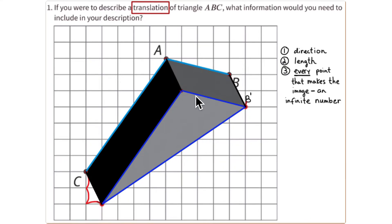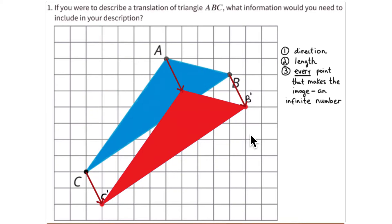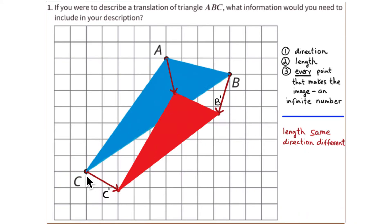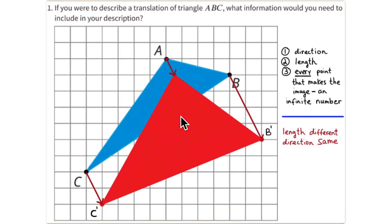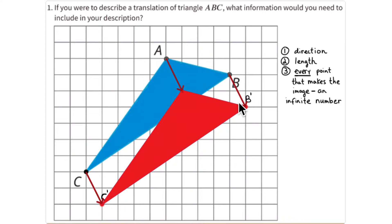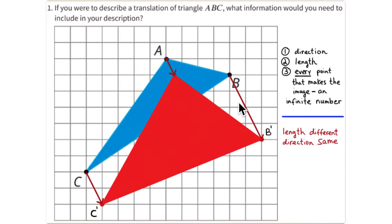You always get this kind of prism when you translate an image and connect the corresponding points. Now, if you change the direction while keeping the length the same, the translated triangle is no longer an exact copy — so that is not a valid translation. Similarly, if you change the length but keep the direction the same, the triangle is no longer an exact copy either.